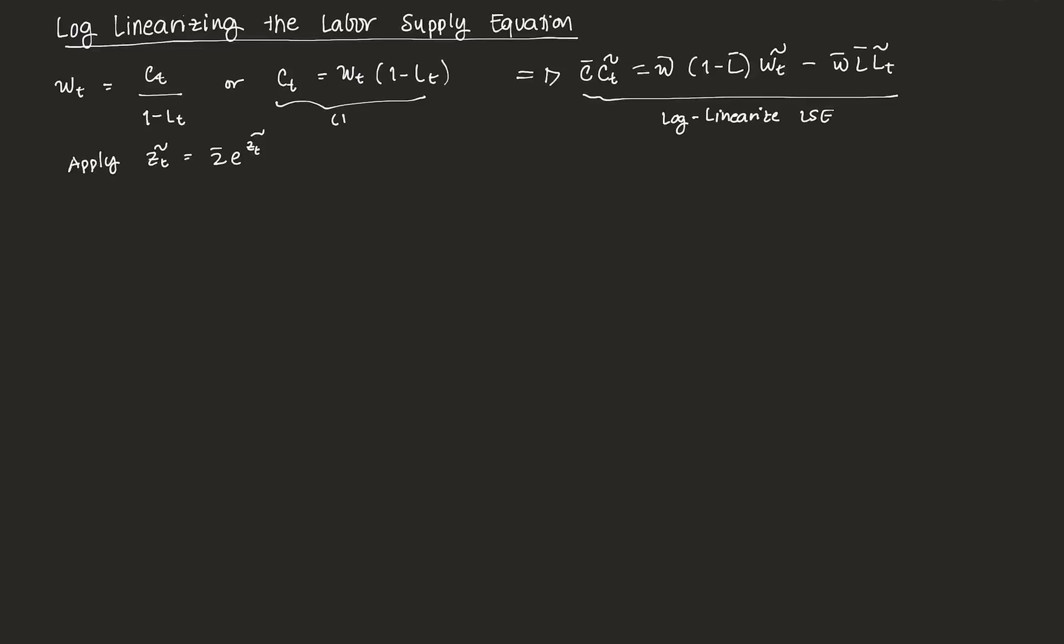So starting from this, say this is equation 1. Starting from 1, we get C bar E Ct tilde is equal to W bar E Wt tilde times 1 minus L bar E Lt tilde.